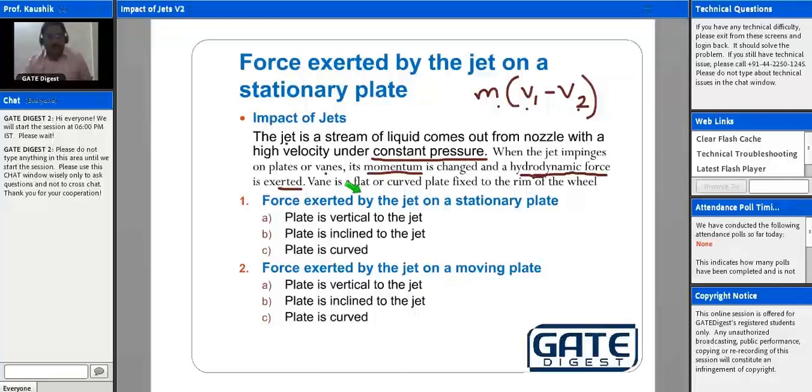So this vane or plate may be flat or curved and it is fixed to the rim of the wheel. So rim of the wheel may be of a turbine or a pump. So we come across this impact of jets applications in case of turbines as well as in case of pumps. Now let us discuss about the force exerted by a jet on a stationary plate.